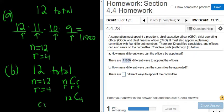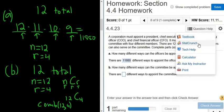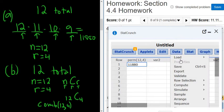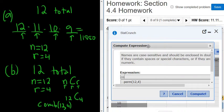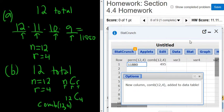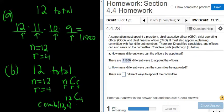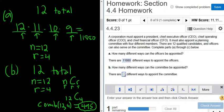And StatCrunch, the command is comb, parentheses, 12 comma 4. And again, the order doesn't matter because they're all committee members. It doesn't matter who gets picked first. You end up in the same place. They end up being committee members. So data, compute, and expression, and then comb 12, 4. So 495. So 495 ways to form these committees. So let me type that in. 495. Good stuff.